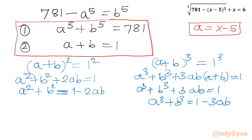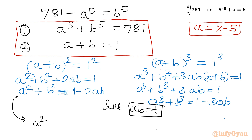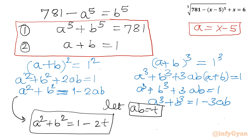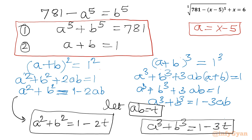Now let AB equal T. So I can write: A squared plus B squared equals 1 minus 2T, and A cubed plus B cubed equals 1 minus 3T. Now I will multiply the sum of squares equation and sum of cubes equation together.